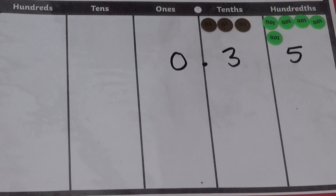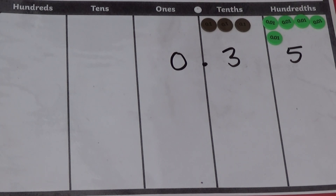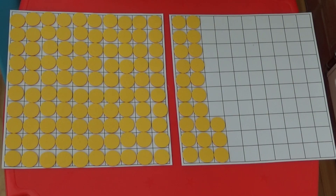If we look at our place value grid, we can't have thirty-five hundredths in the hundredths column. So instead, we have three tenths and five one hundredths, which are the same as thirty-five hundredths.